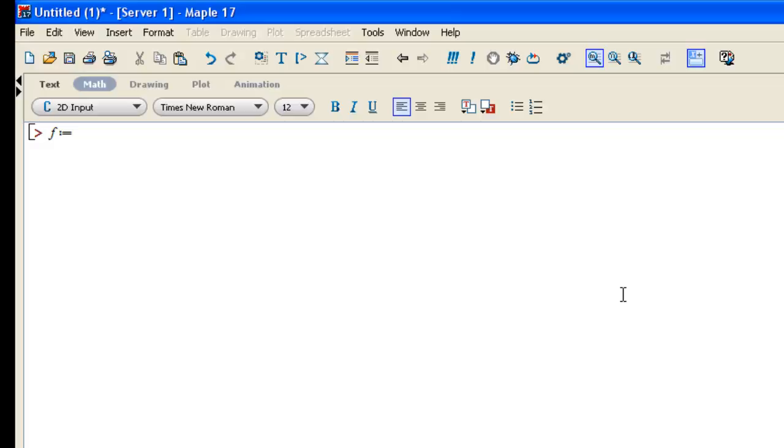So for example, if I want f of x to be equal to 3x squared plus 2x minus 8, I would type f, colon, equal, and then x is the variable it will take, so this will be a function f of x, and then I make an arrow by typing a dash and a greater than sign.